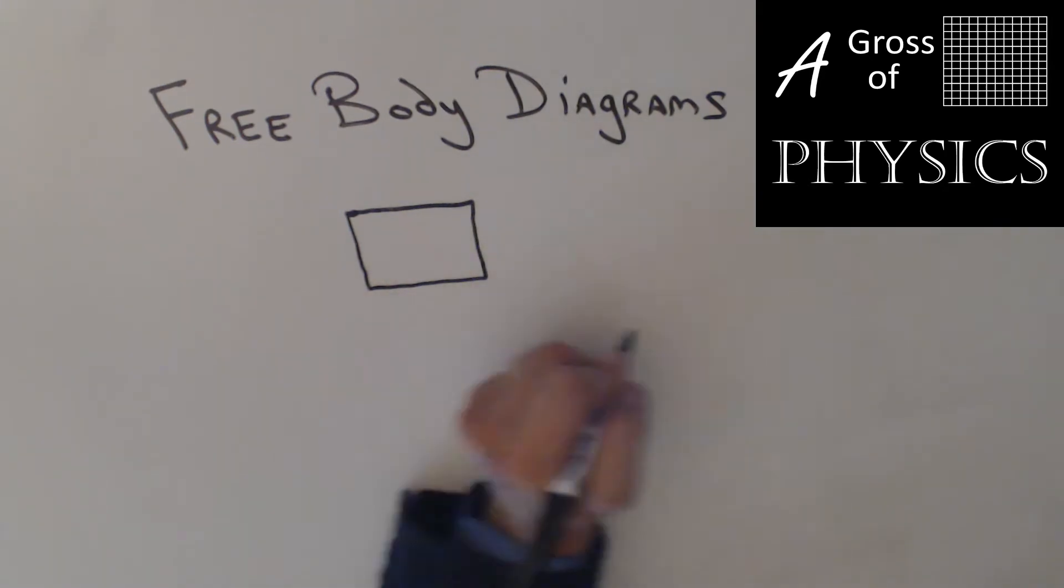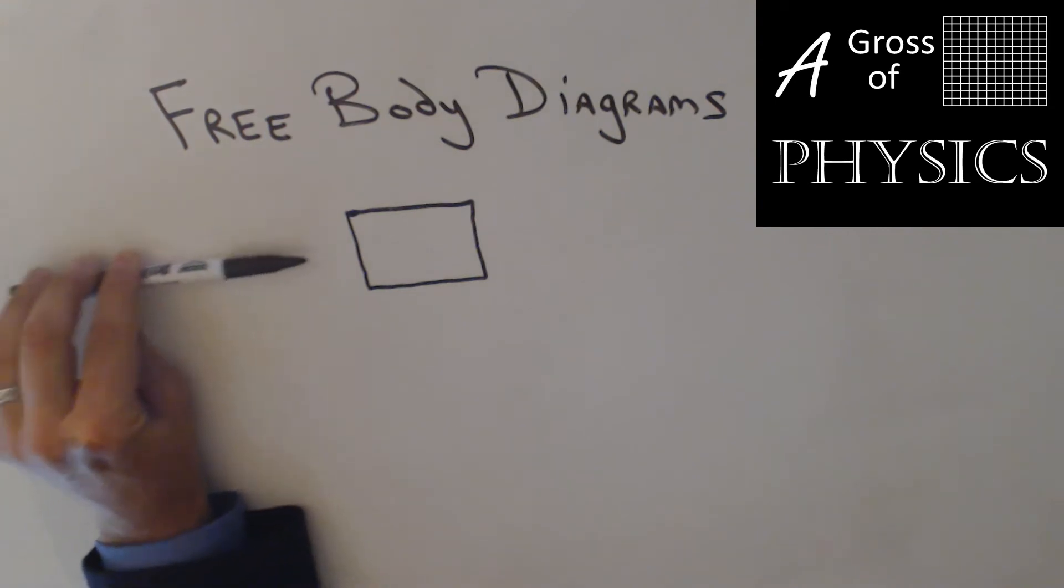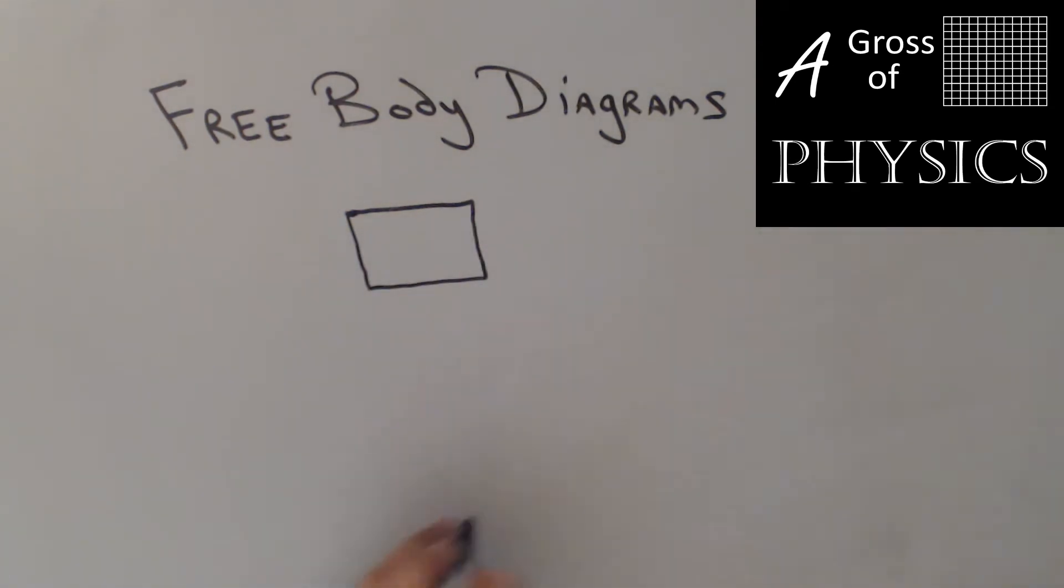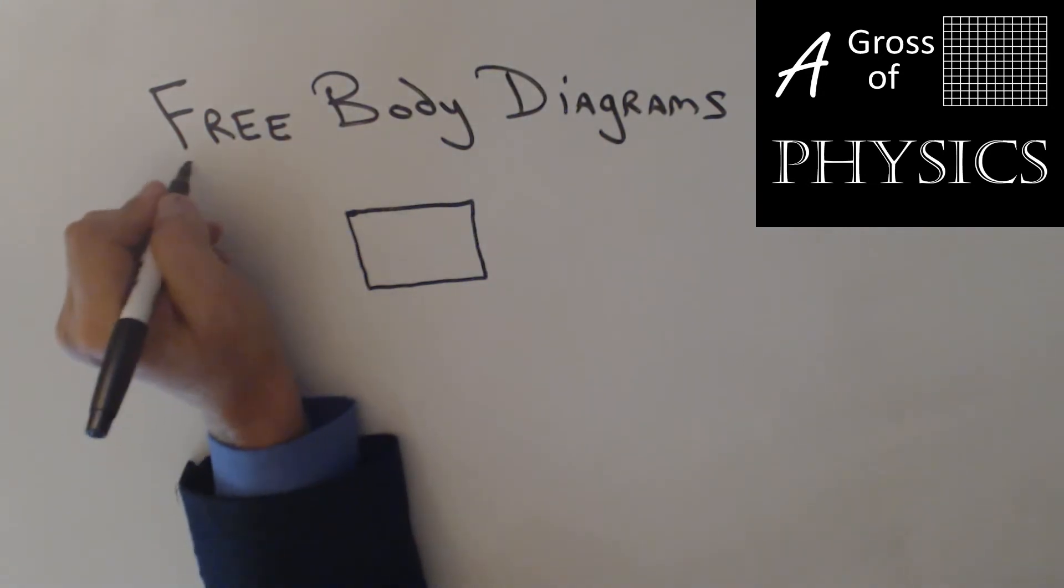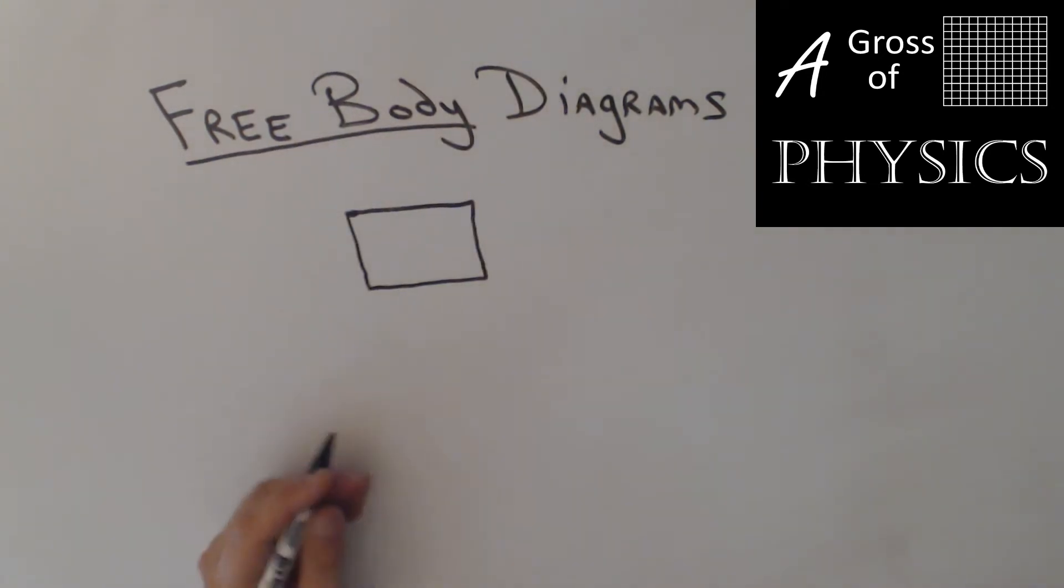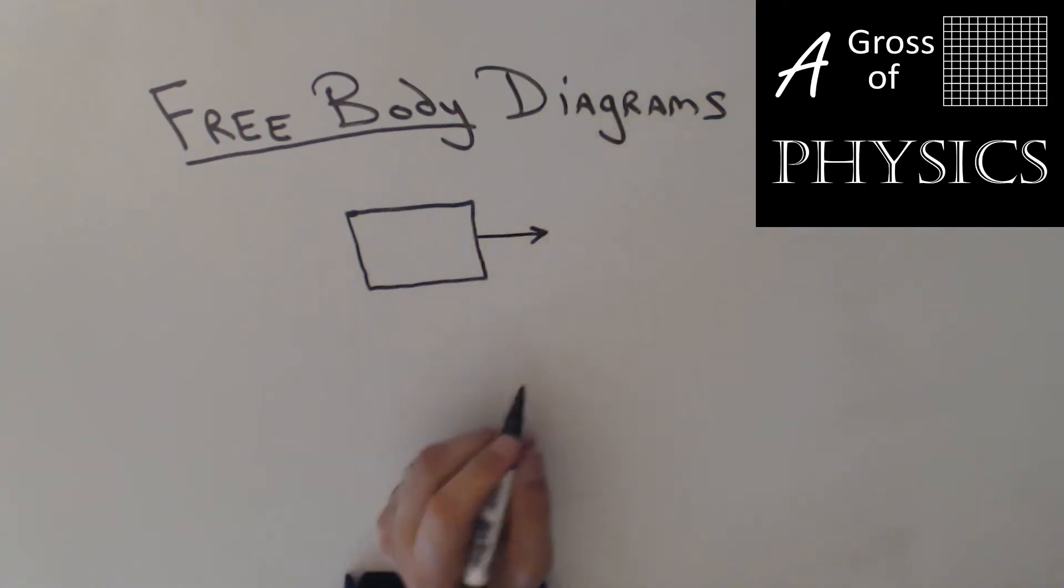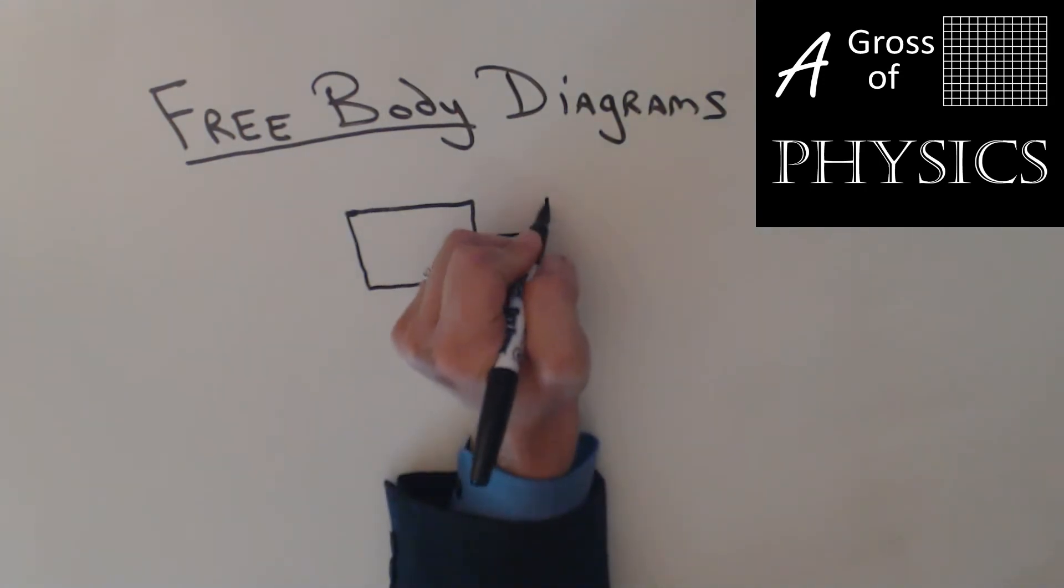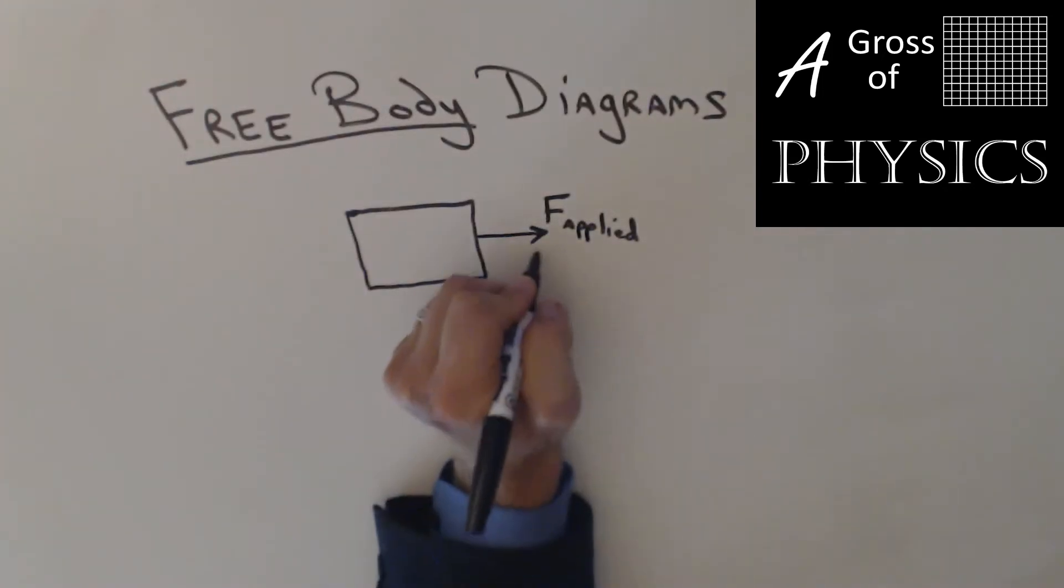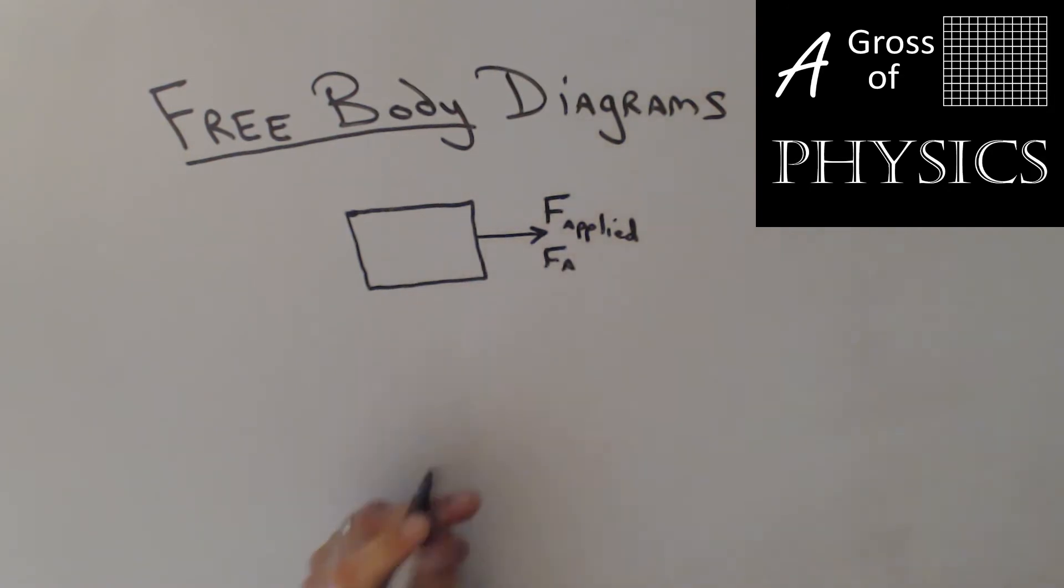Now what we're going to do is we're going to push a book across the table. So if this is the book, I'm going to push it from the side across the table. It's going to move to the right. Now one thing to note is we draw a free body because it's only the one object involved. So we're only going to draw, in this case, the book. Now what forces act on the book? Well, first, it's going to be the force that I apply to it to the right. So we usually call that FA or F applied. FA for short. And there'll be a number for that. It could be 10 Newtons. It could be 20 Newtons. It could be anything.